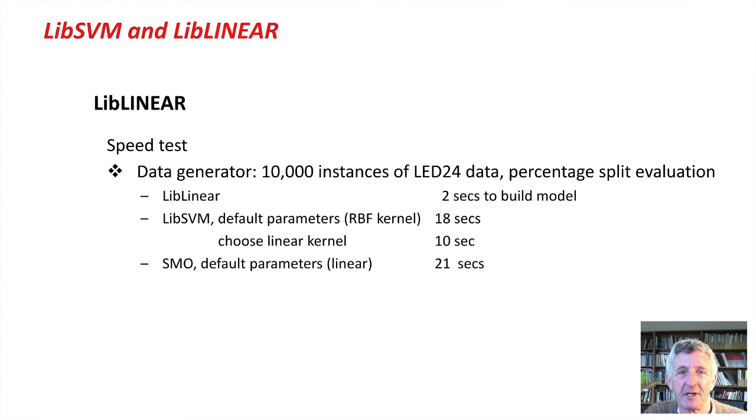Just a quick look at lib-linear. I did a speed test. I used the data generator on Weka's preprocess panel to generate 10,000 instances of this data, LED24. Lib-linear took 2 seconds to build the model. Lib-svm took 18 seconds to build the model, but that's a slightly unfair comparison because it's using a non-linear kernel. When I changed it to use a linear kernel, it took 10 seconds. The SMO with default parameters, which is a linear kernel, took 21 seconds. You can see lib-linear is quite a lot faster.